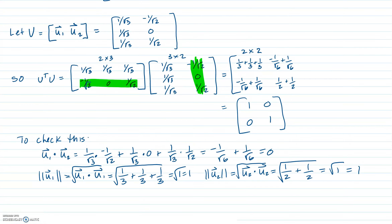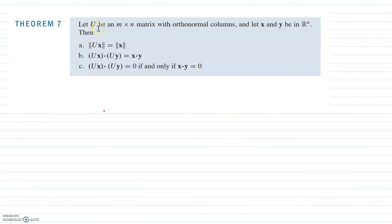Theorem 7 states that if U is an n-by-n matrix with orthonormal columns and x and y are in R^n, then you have the following three properties: (a) the length of Ux equals the length of x; (b) (Ux) · (Uy) = x · y; and (c) (Ux) · (Uy) = 0 if and only if x · y = 0.